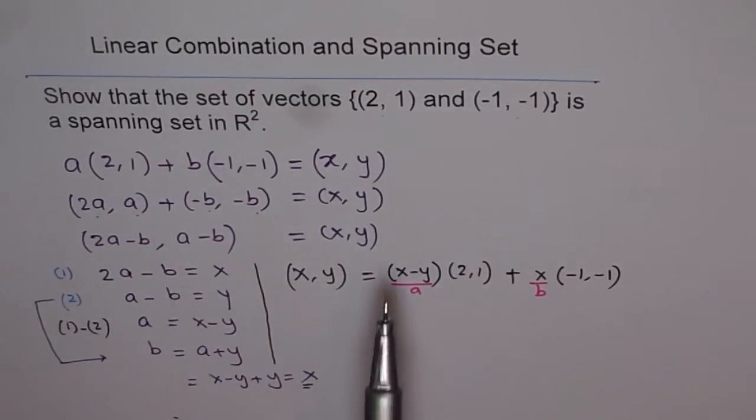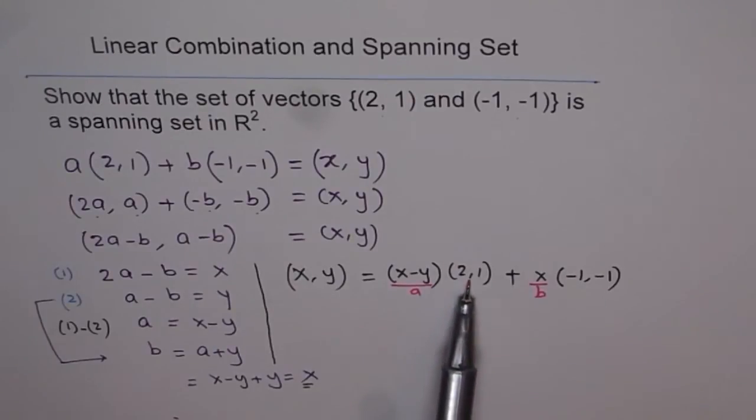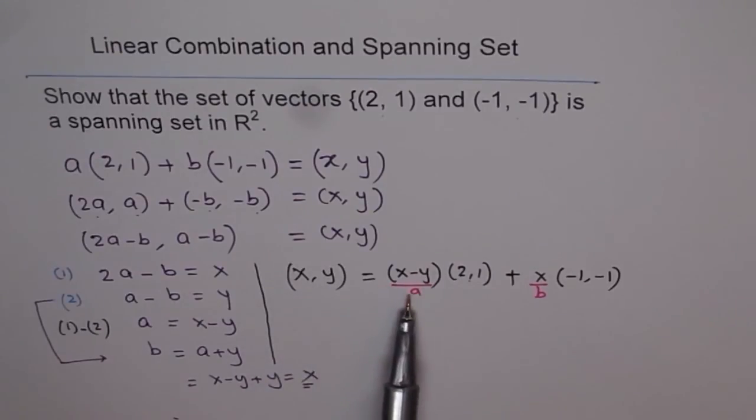So therefore, we can write any vector in R², any general (x, y) is any general vector in R², as a linear combination of the given set of vectors. And since we can write any vector in R² as a linear combination of the given set, we say that the set can span. Is a spanning set in R². That is what it means.